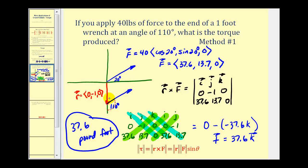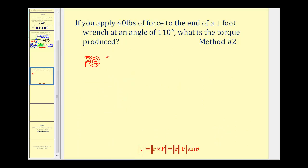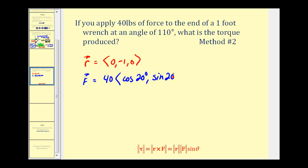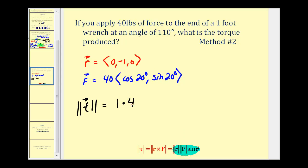Now let's solve the same problem using the second method. We already know vector R has components zero, negative one, zero, and the force vector is forty times cosine twenty degrees, sine twenty degrees. Using the formula: magnitude of torque equals magnitude of R times magnitude of F times sine theta. Vector R is a unit vector, so its magnitude is one; the magnitude of the force vector is forty; and theta is given as one hundred ten degrees. So we compute one times forty times sine of one hundred ten degrees.